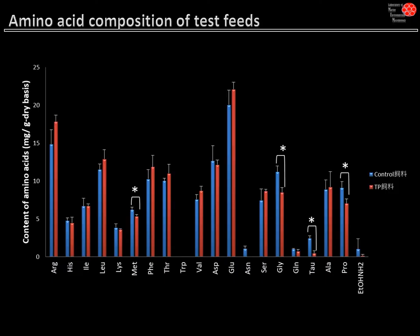This shows the amino acid composition of the diets. Blue bars represent the control and red bars represent the TP diet. The x-axis shows abbreviations for each amino acid — for example Arg for arginine, His for histidine — and the y-axis shows content in milligrams per gram dry basis. We found slightly higher values in the control group only for methionine, glycine, and threonine, but no significant differences were found for the other amino acids.